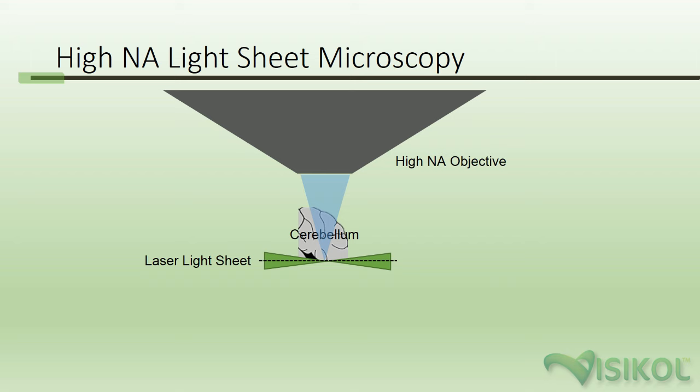This process can be clearly seen here, where a whole mount spinal cord cleared via iDISCO is imaged for autofluorescence using an Ultra Microscope from LaVision. The streaking in the tissue is caused by refractive index mismatches in the mounting solution that cause optical aberrations.